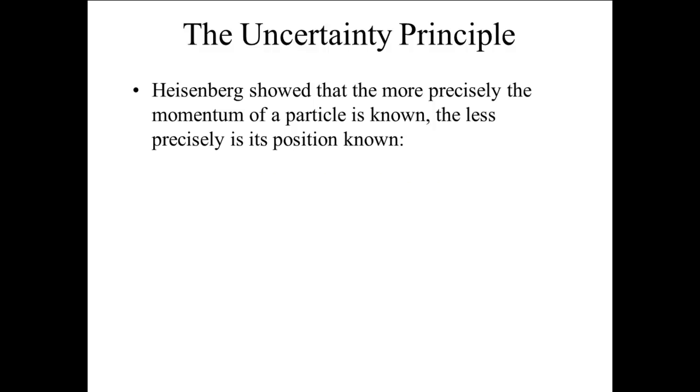This is described by the equation delta x, the uncertainty in the position of the particle, times delta mv, the uncertainty in the momentum of the particle, is greater than or equal to h, which is Planck's constant, divided by 4 pi.